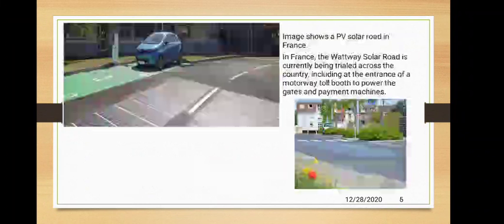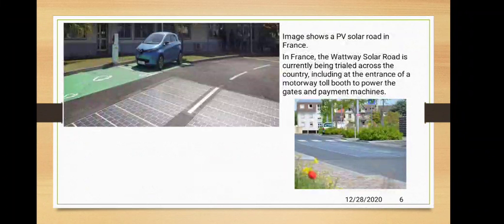In the image shown on the left and bottom of the screen, we can see a solar road system currently being trialled across France. It includes solar panels installed under the road and is used to power gates and payment machines.